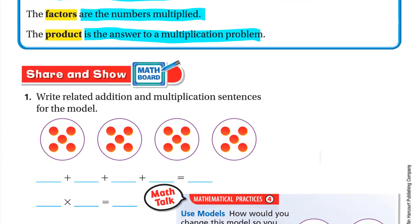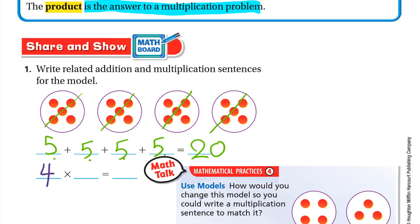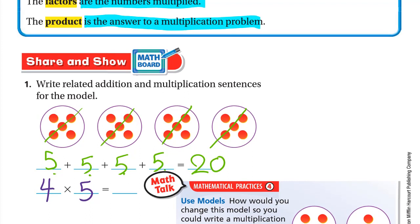Now let's go to share and show. Write a related addition and multiplication sentence for the model. Here we have four groups of five. For addition: five plus five plus five plus five — five plus five is ten, plus five is fifteen, fifteen plus five is twenty. For multiplication: we have four groups, each group has five counters, so four times five equals twenty.